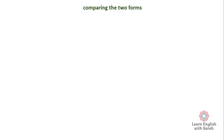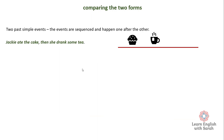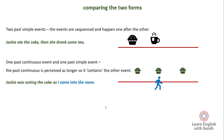Now let's start comparing these two forms. The past simple can sequence events — one, two — no problem. But what about when we have one past continuous event and one past simple event? In this situation: 'Jackie was eating the cake as I came into the room.' This is where the word 'perceive' becomes important. The past continuous is perceived as the longer event — it contains the shorter event. In the mind of the speaker, the cake-eating is the longer event, and me coming into the room is the short event.